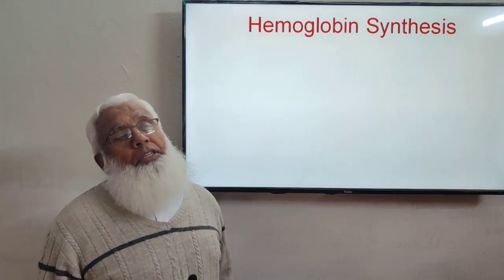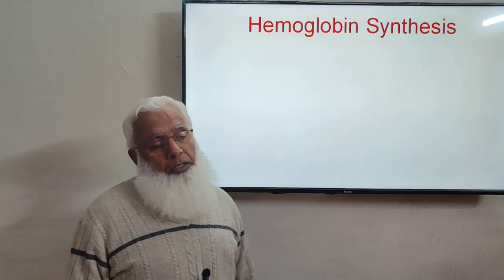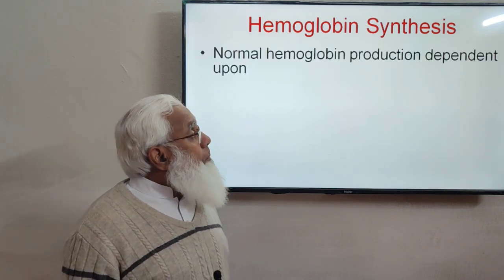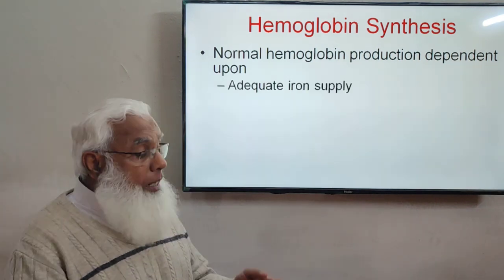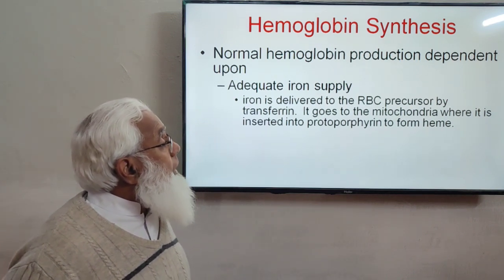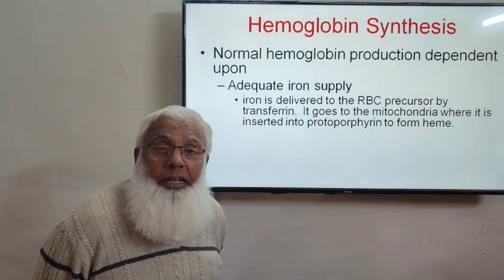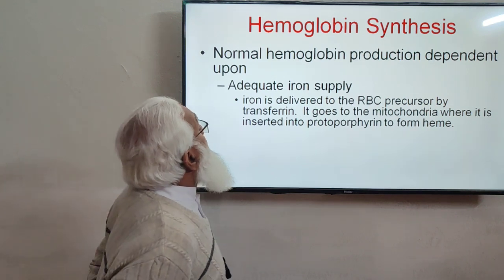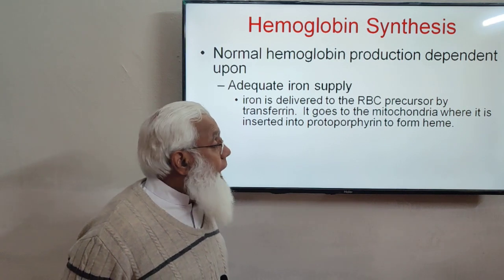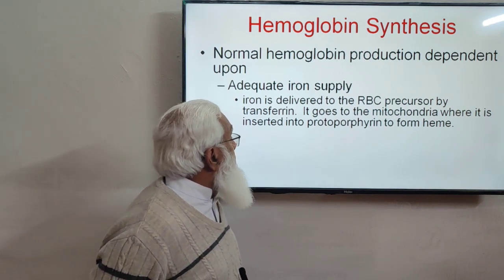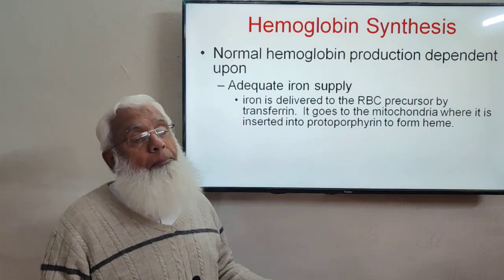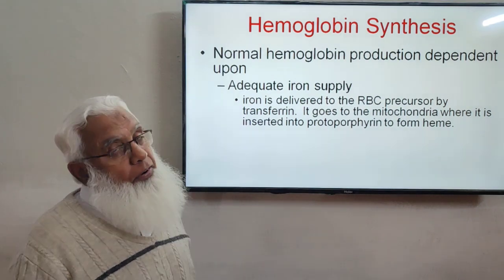A very important part of RBCs is hemoglobin, the main ingredient responsible for oxygen carriage. Normal hemoglobin production depends on an adequate supply of iron. Iron is delivered to RBC precursors in the bone marrow by transferrin, a plasma protein carrier. It goes to the mitochondria where it is inserted into protoporphyrin to form heme. Protoporphyrin is formed from amino acids, and iron combines with it to form heme.